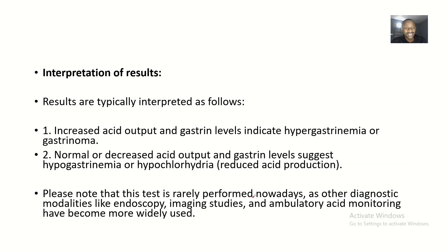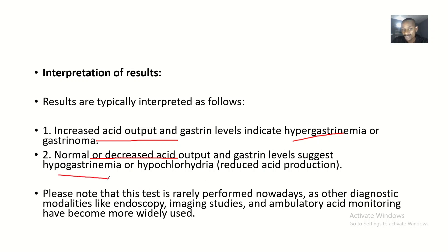For interpretation of results, there are essentially two outcomes. Increased acid output and gastrin levels indicate hypergastrinemia or gastrinoma. Normal or decreased acid output and gastrin levels suggest hypogastrinemia or hypochlorhydria — hypochlorhydria being reduced acid production in the stomach.